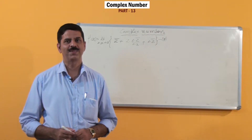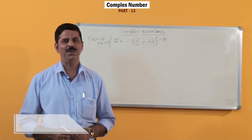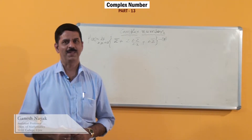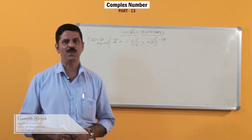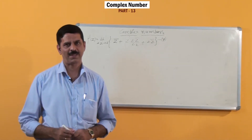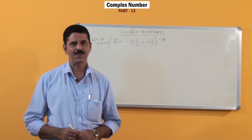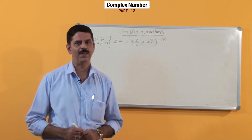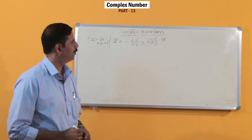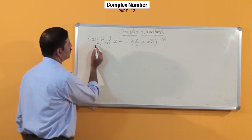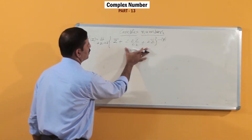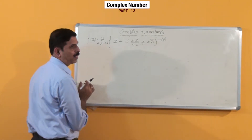Hello friends. We will continue finding the derivative of f(z) = |z|². In the last class we got the first part on simplification: f'(z) is equal to this much.